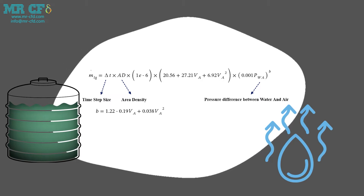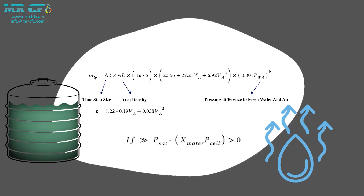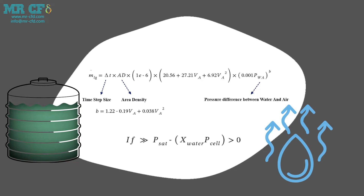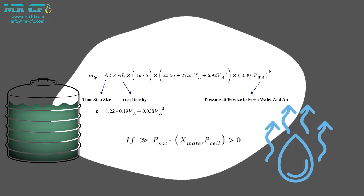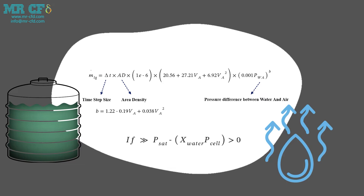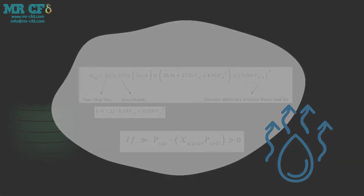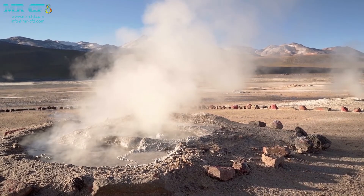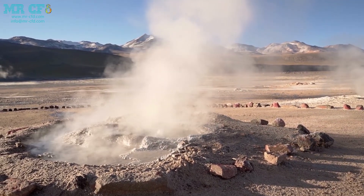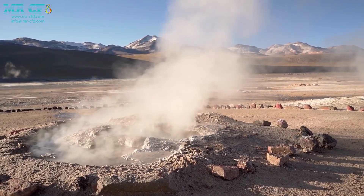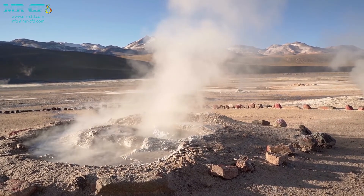It should be mentioned that the mass transfer equation has a pre-assumption relation which states that the difference between saturation pressure and molar ratio multiplied by cell pressure must be higher than zero. The molar ratio is equivalent to the pressure ratio. Therefore, the molar ratio multiplied by the pressure in each cell can give us the water pressure.